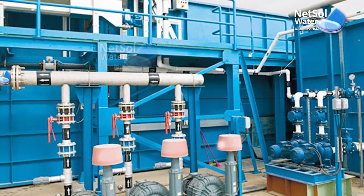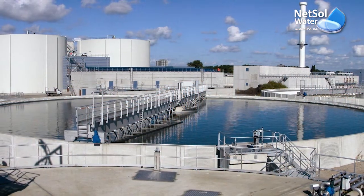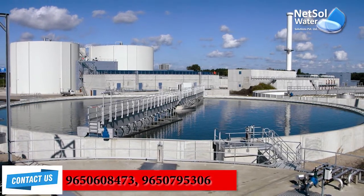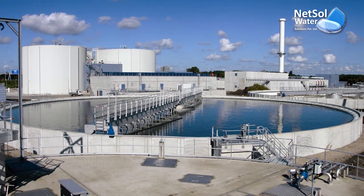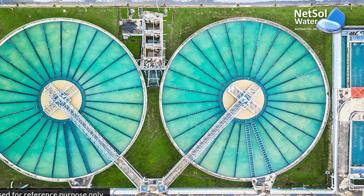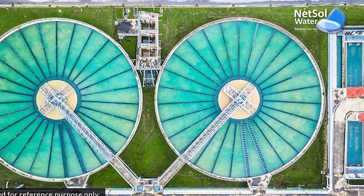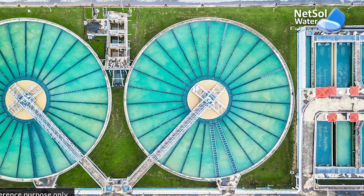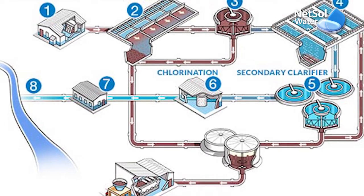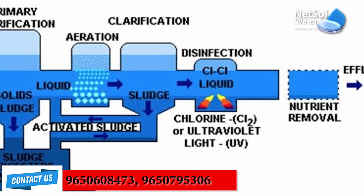Sewage treatment plants can treat waste from a single commercial property or a group of residential dwellings. Our sewage treatment plants serve different types of industries and residences, and the size of a sewage treatment plant depends on the scale of use — for example, if you are living in a society, we can provide an appropriately sized sewage treatment plant. Sewage treatment plants have three stages: primary treatment, secondary treatment, and tertiary treatment. Every stage is very important and each stage has a different function.